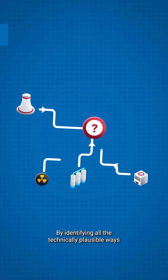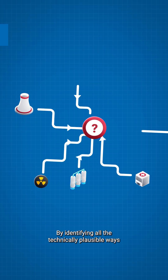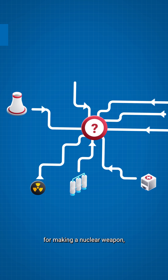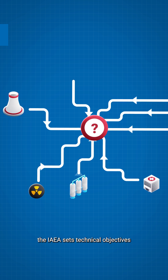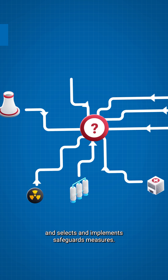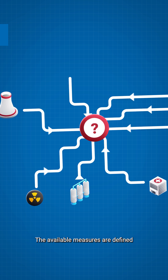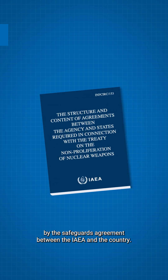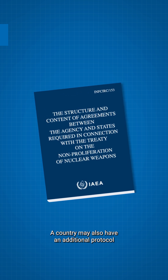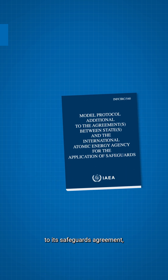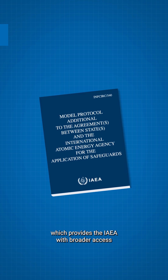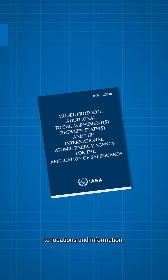By identifying all the technically plausible ways by which a country could acquire nuclear material for making a nuclear weapon, the IAEA sets technical objectives and selects and implements safeguards measures. The available measures are defined by the safeguards agreement between the IAEA and the country. A country may also have an additional protocol to its safeguards agreement, which provides the IAEA with broader access to locations and information.